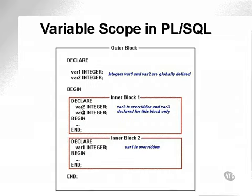In other words, the definition of var2 will override the definition of var2 from the outer block. What this means is that var2 being declared as having local scope for this inner block 1 can be changed in inner block 1. Once inner block 1 has completed, that particular declaration of var2 disappears.